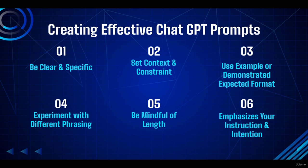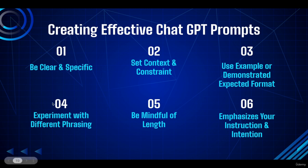The fourth aspect: experiment with different phrasing. Try different phrasing or variations of prompts to explore how they influence the model's responses — small changes in wording can often lead to significantly different outputs. Iterate and refine your prompts to achieve the desired outcome. This is the most challenging part, requiring lots of trials and errors, but if you're serious about prompt engineering, that's what it takes to become an expert.